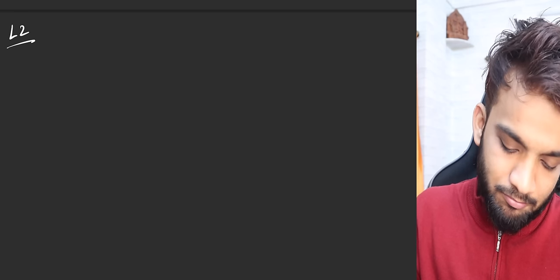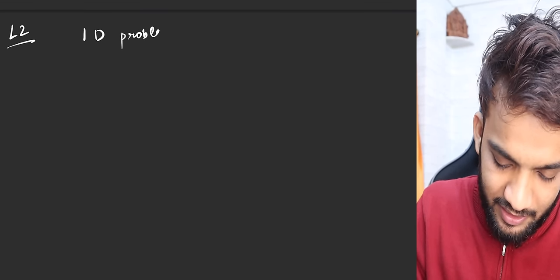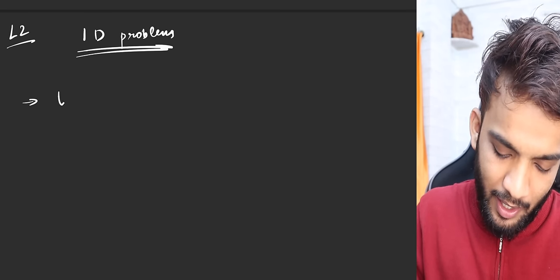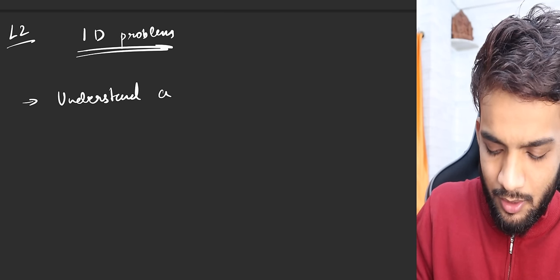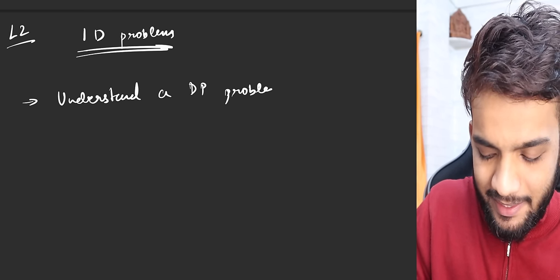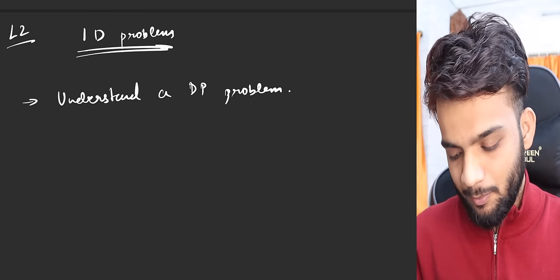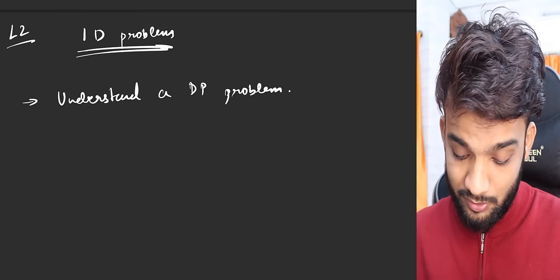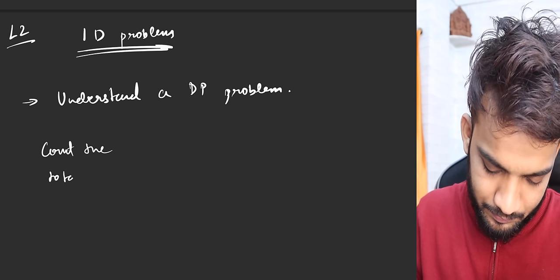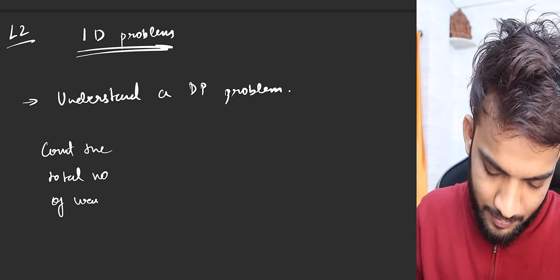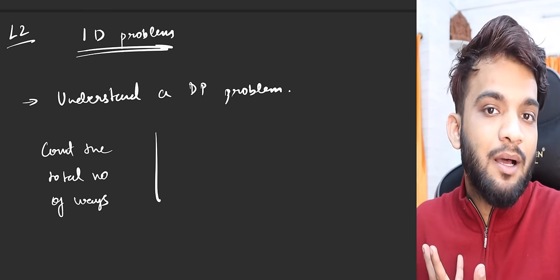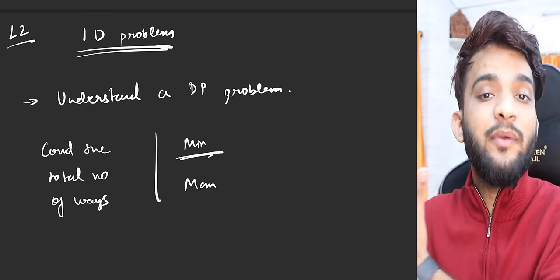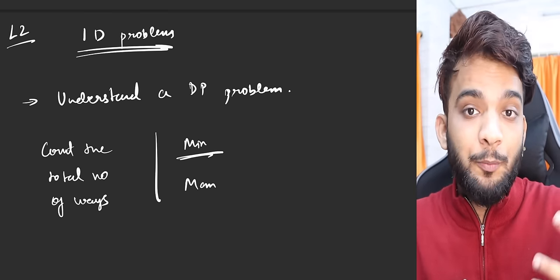In all 1D DP problems, let's first understand how to identify that this is a DP problem. Whenever the question says 'count the total number of ways' — that's the first indicator. The next case is when there are multiple ways of doing something and they ask you to figure out which gives the minimum or maximum output — that's the second indicator.